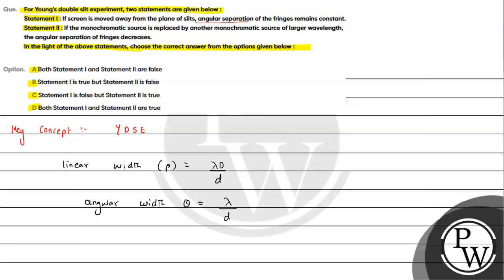Capital D is the separation of the screen from the slit. In the general setup, we draw two slits and a screen, where D is the separation between the plane of the slit and the screen.